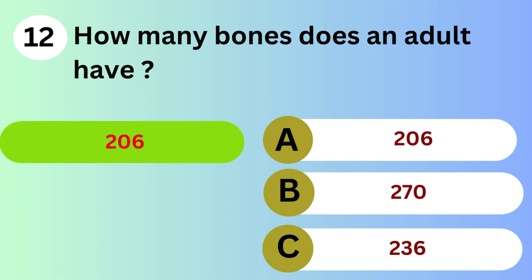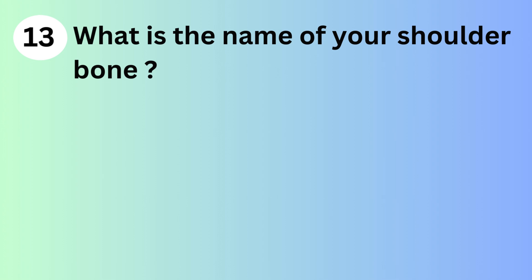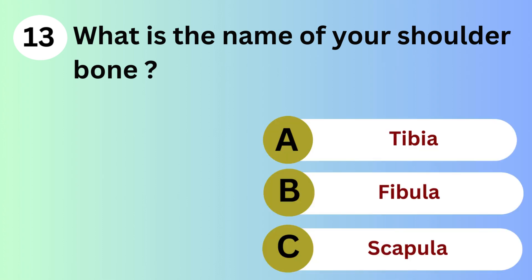Answer is A. 206. What is the name of your shoulder bone? A. Tibia. B. Fibula. C. Scapula.